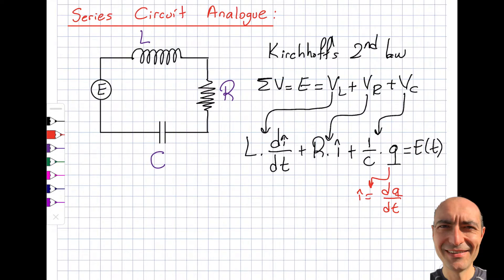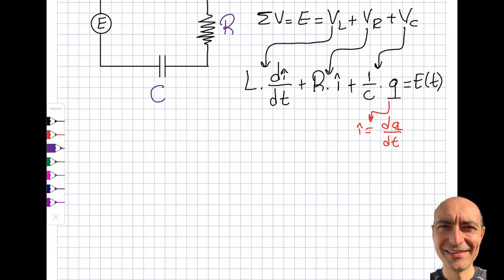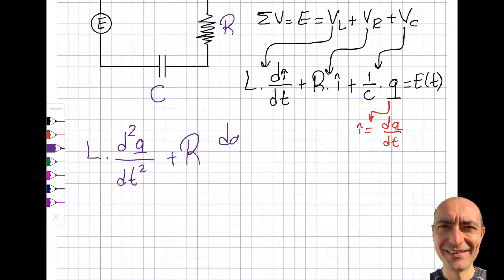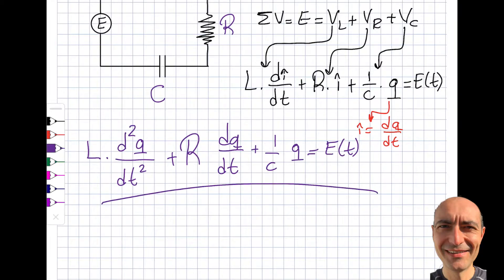So it will be L times d²Q/dt² plus R times dQ/dt plus (1/C) times Q equals E(t). This is the equation I was looking for. The current does not appear explicitly anymore. I will first find the charge Q, then plug into i = dQ/dt to find the current. If the charge is constant as a function of time, the current will be zero.